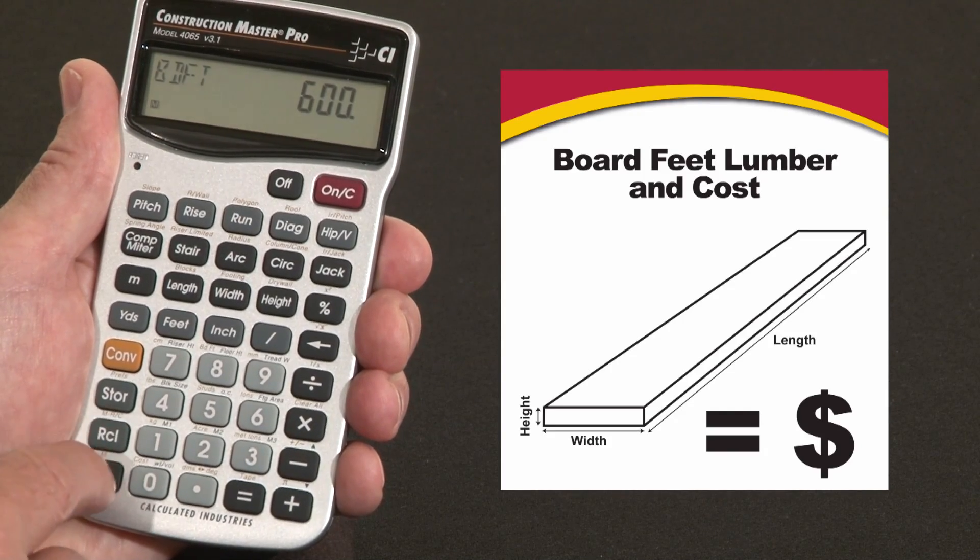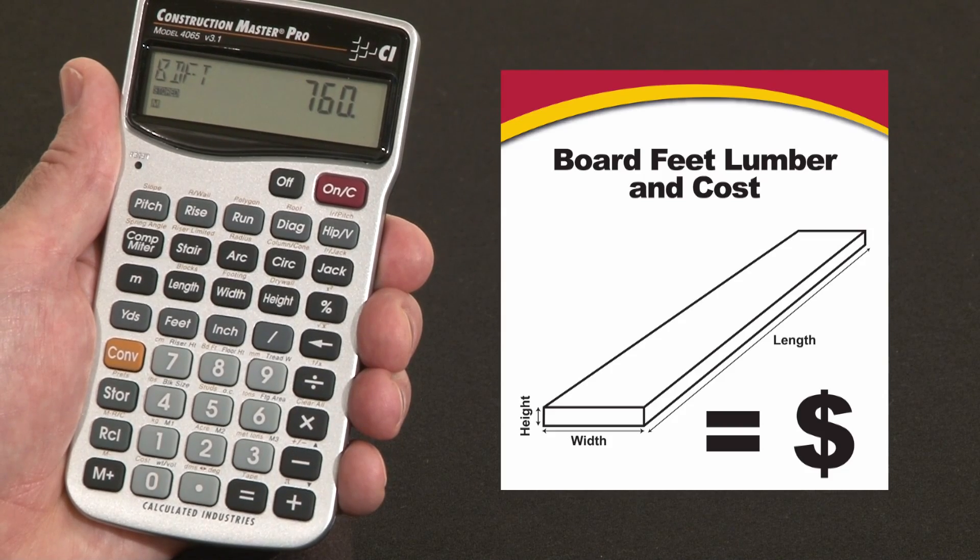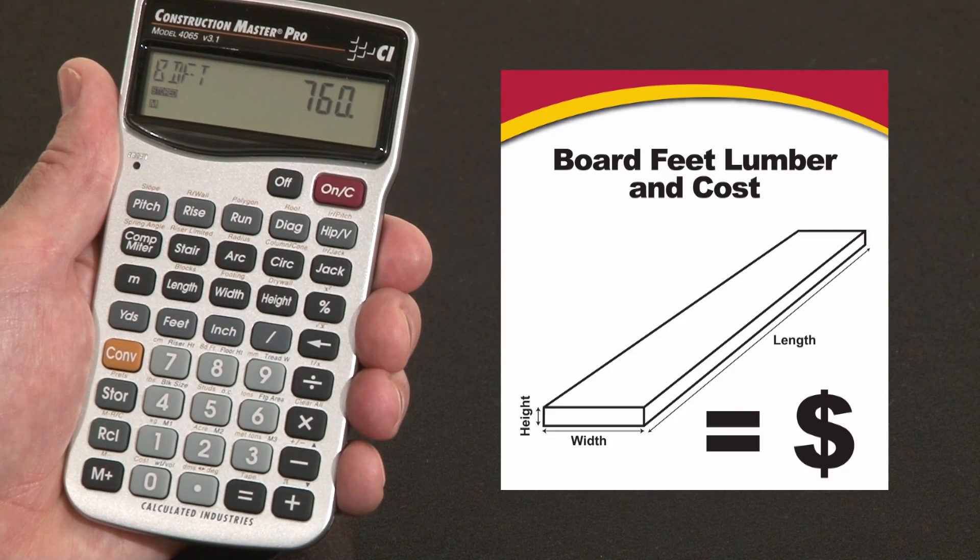Now I can recall what's in the memory, so I have a total of 760 board feet. Say this particular material goes for $375 per thousand board feet.